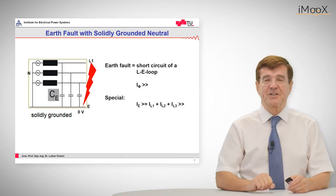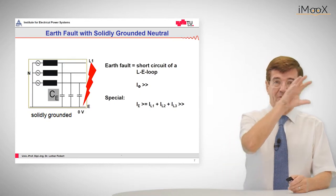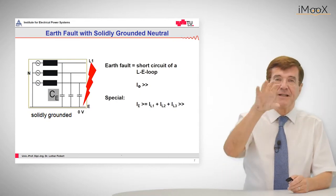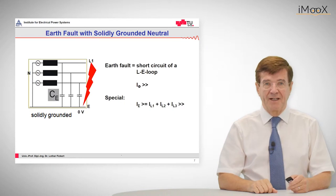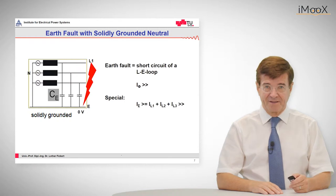There's only one specialty, that is that the residual current, which is made up of the sum of L1, L2 and L3, is very large and this is a characteristic for a ground fault in a solidly grounded system. And this can be evaluated by protection.